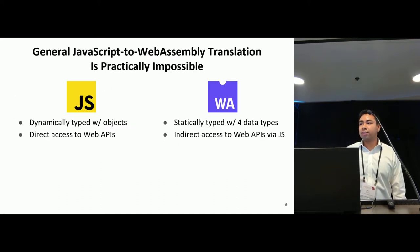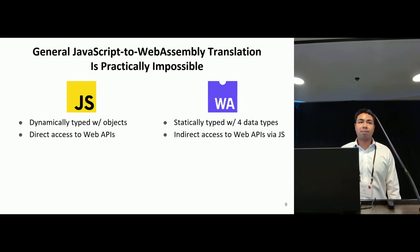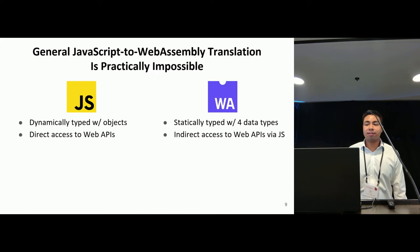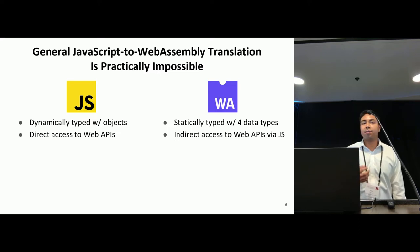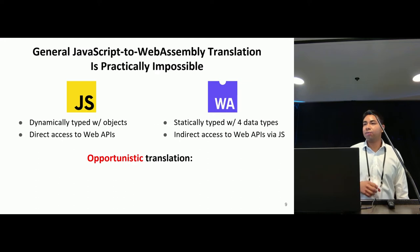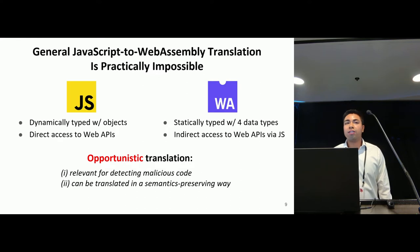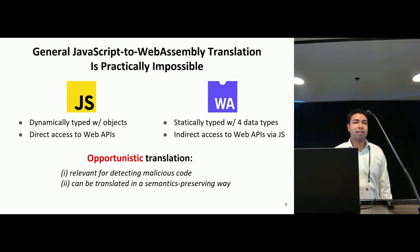Although we use JavaScript-to-WebAssembly translation, a broad approach is practically impossible. This is due to the fundamental differences in the two languages, namely in their type systems and their access to the web APIs. For these reasons, we instead rely on an approach of opportunistic translation — we only translate JavaScript code if it's relevant for detecting malicious code and if it can be translated to WebAssembly in a semantics-preserving way.